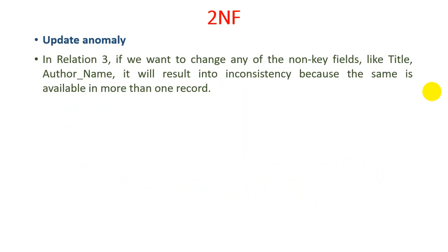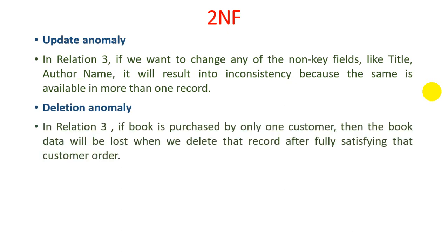Now what is an updation anomaly? In relation R3, if we want to change any of the non-key fields like title or author name, it will result in inconsistency because the same data is available in more than one record. For example, if a book title or author name changes in relation R3, there are lots of records with the same book, so modifications must be made across all records. Our main target should be that the record is changed in one place and it is affected everywhere. So updation anomalies must be removed.